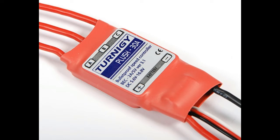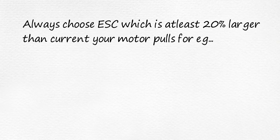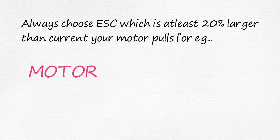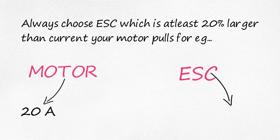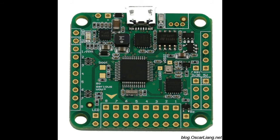Always buy an ESC that has a built-in Battery Eliminator Circuit (BEC). The function of the BEC is to convert the LiPo battery voltage of 11.1V down to a constant 5V, which is then fed to the flight controller. Also make sure that you buy an ESC rated at least 20% higher than the current your motor draws. For example, if your motor pulls 20 amperes, your ESC should be rated at least 24 amperes or higher.